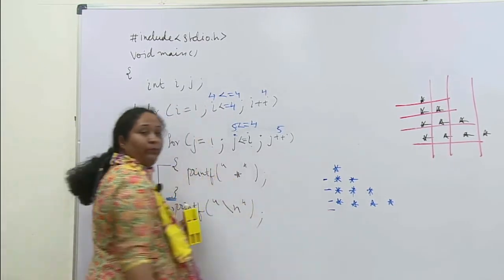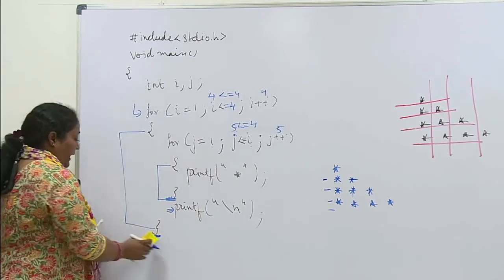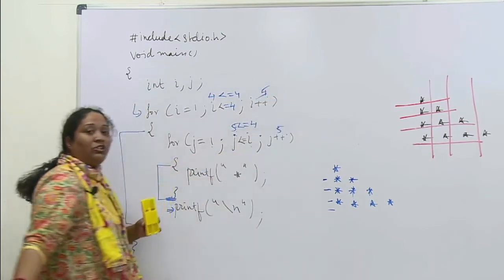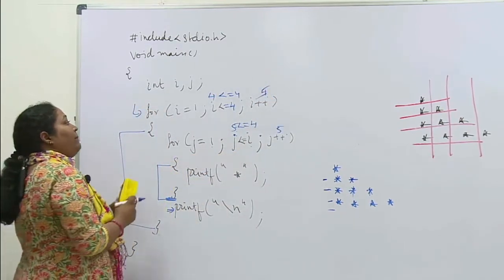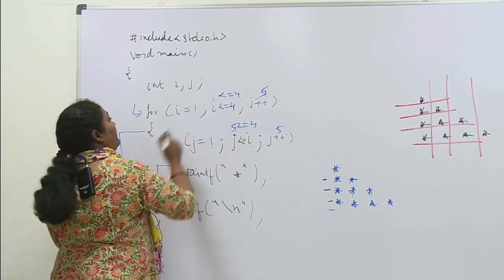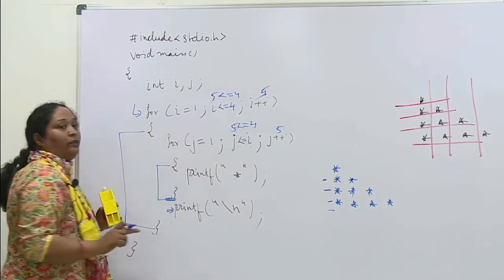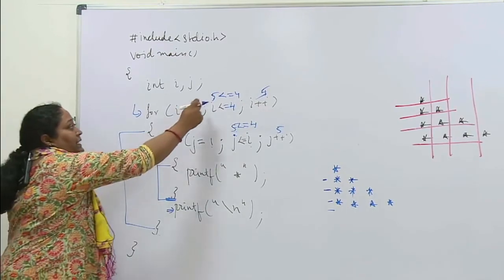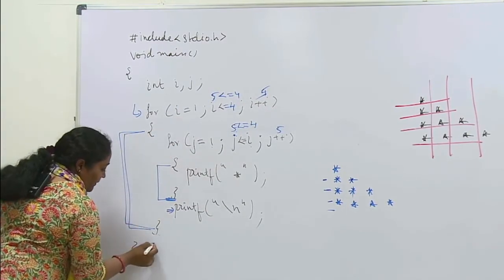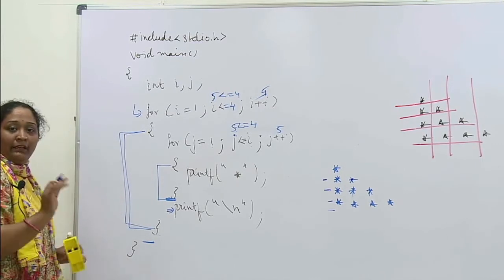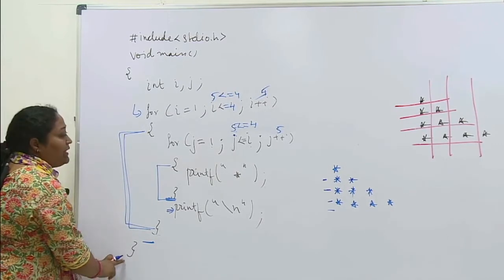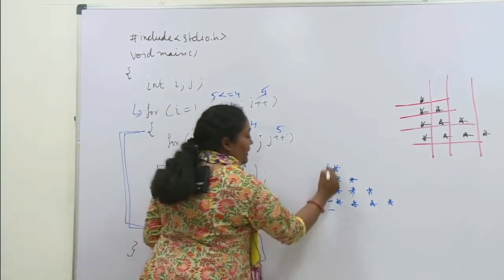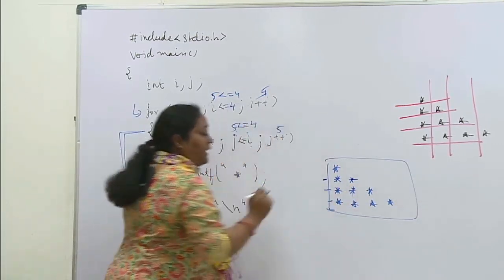Kya bol rahi hoon aap? Agli line mein aao. Agli line mein aagaye. Ab apan yahan aayenge. Yahan par i ka maan kya ho jaega? Ab baar 5. Jaise hi i ka maan 5 hota hai, 5 is less than equals to 4, ye condition apni yahan kya hogi? Galat hogi. Jaise hi ye condition galat hogi apan is pure block se bahar nikal ke yahan aa jaenge. Yahan koi statement nahi hai, seedha mera main khatam ho raha hai to mera jo program hai wo finish ho jaega aur mere output par ye cheez dikhaayi degi.